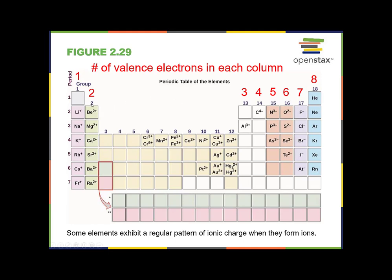The first row of the periodic table only has two elements because the first shell only holds two electrons. The next row has eight elements because the next shell holds eight electrons, and the row after that also has eight. So the periodic table is shaped the way it is because the number of elements in each row corresponds to the number of electrons each shell holds.